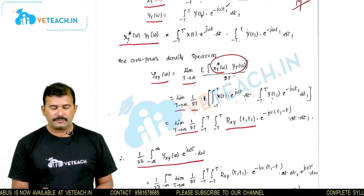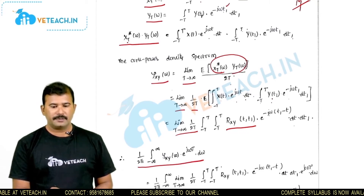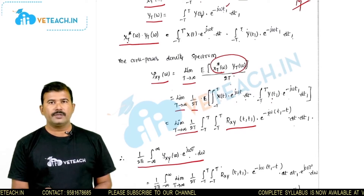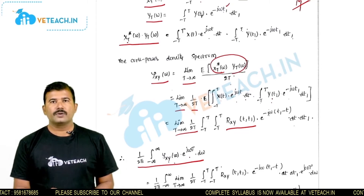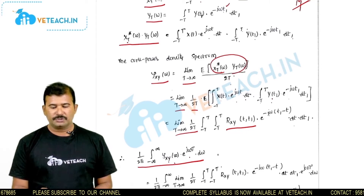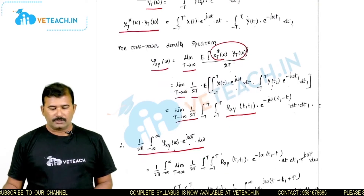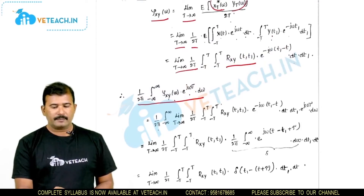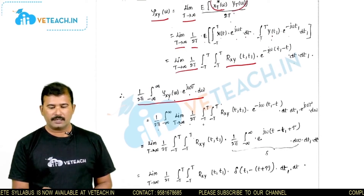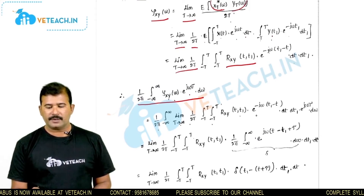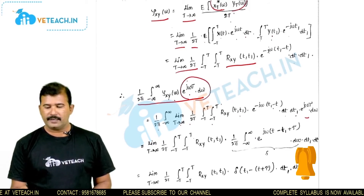The inverse Fourier transform of the cross power density spectrum is: 1/2π times the integral from minus infinity to infinity of ψ_xy(ω) e^(jωτ) dω. This should equal the time average of the cross correlation function, which is our goal to prove. Substituting the expression for ψ_xy(ω), we write the double integral of R_xy(t, t₁) with the combined exponential terms and the e^(jωτ) factor.